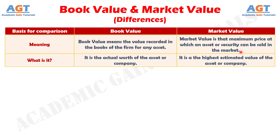Number two: book value is the actual worth of an asset of the company, whereas market value is just a projected value of the firm's or asset's worth in the market.